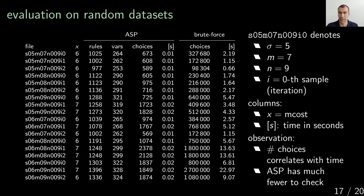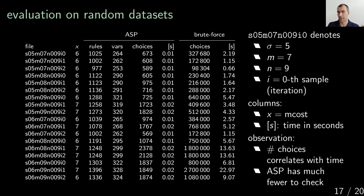I did that experiment with randomly generated small datasets. One of these cryptic strings denotes the dataset type: 's' marks sigma, so sigma=5 means alphabet size five; m=7 means seven input strings; each string has length nine; and it's the zeroth iteration. In the columns, 'x' is the maximum cost (the solution's maximum Hamming distance, e.g., 6 or 7), and 's' is the seconds needed for computation. You can see ASP is much much faster than brute force, because it has far fewer choices to consider.